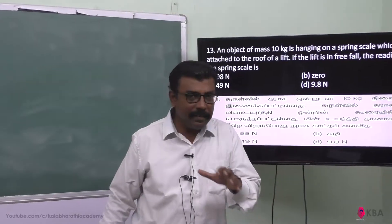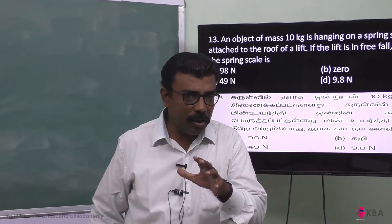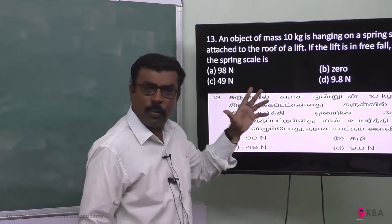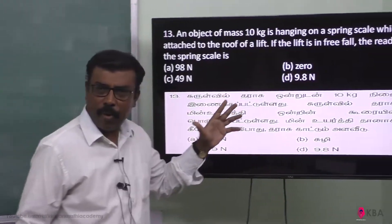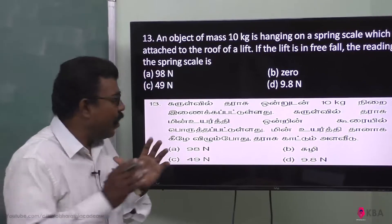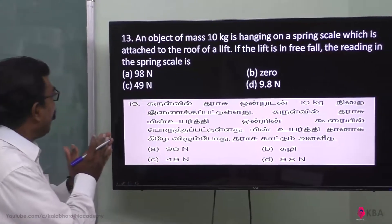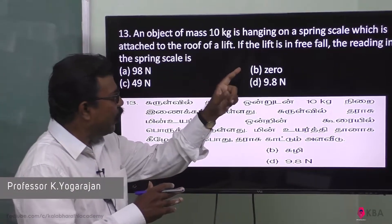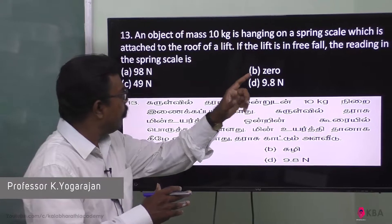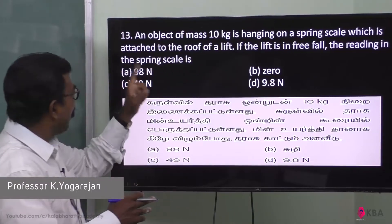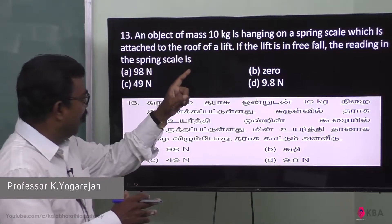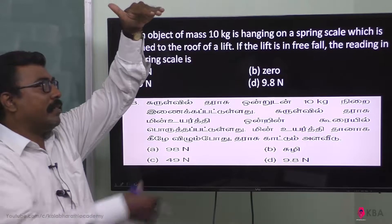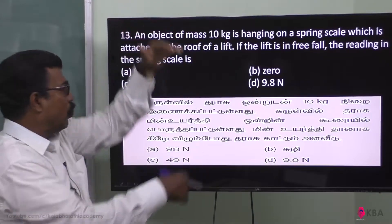An object of mass 10 kg is hanging on a spring scale, which is attached to the roof of a lift. We have the lift, spring balance, and the mass.